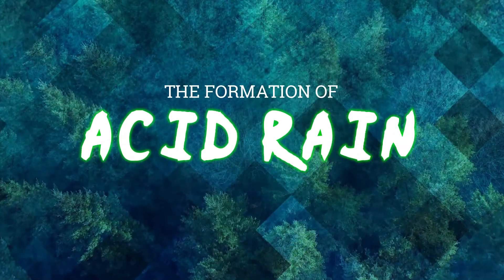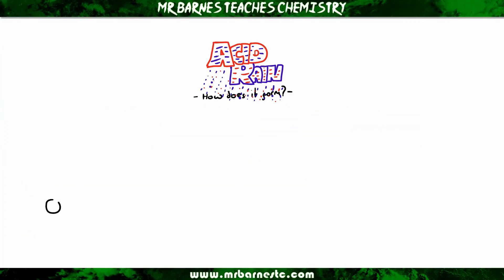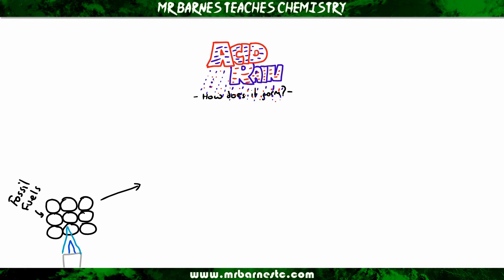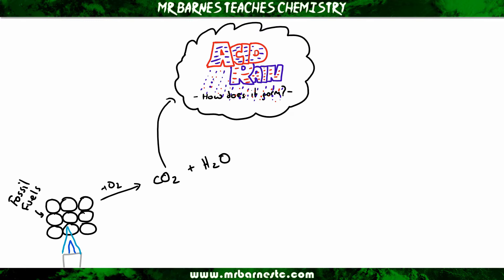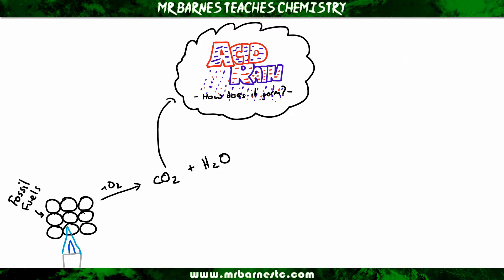Hi guys, welcome to this video on the formation of acid rain. When we take any fossil fuel and combustion occurs, it reacts with oxygen to form carbon dioxide and water. Those gases go up into the atmosphere and dissolve into the clouds, so rainwater is therefore naturally slightly acidic. The carbon dioxide forms something called carbonic acid.